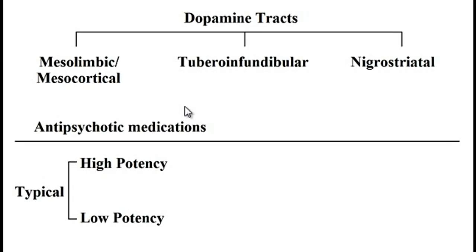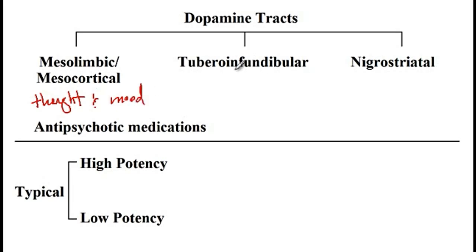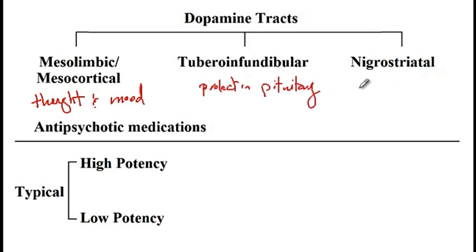There are three different dopamine tracts in the brain. These include the mesolimbic or mesocortical, which affects thought and mood; the tuberoinfundibular, which affects the release of prolactin from the pituitary; and the nigrostriatal, which affects extrapyramidal motor activity.